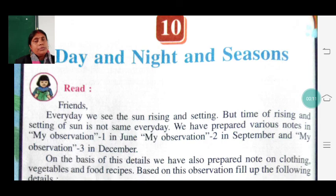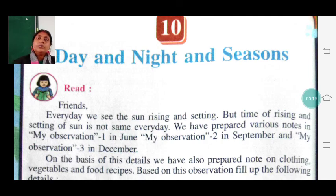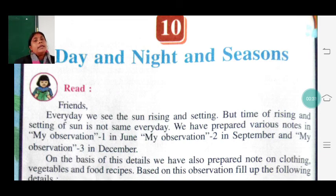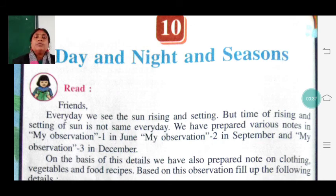In part 1, as you know, I have already explained using the projector how day and night are happening and how the seasons change. It is only due to the solar system — the position of our earth around the sun. That content is not in our textbook, so I explained it via the projector. Now let me explain what is there in our textbook.